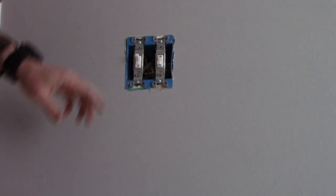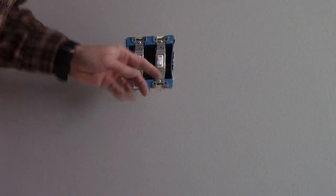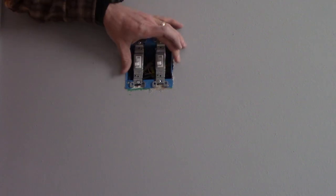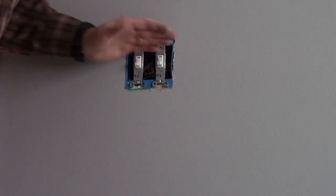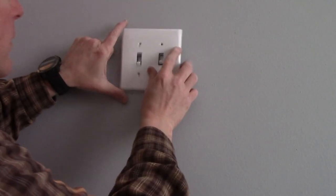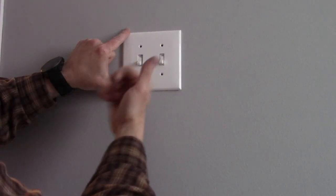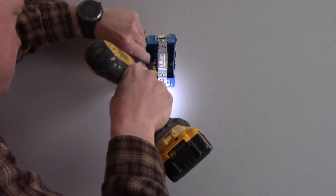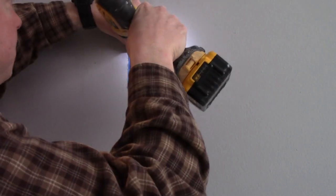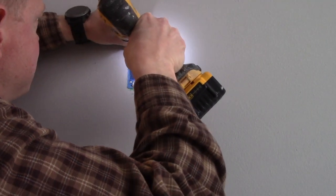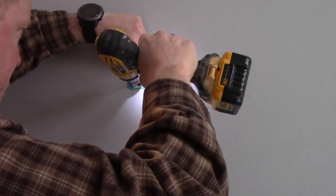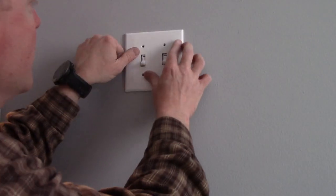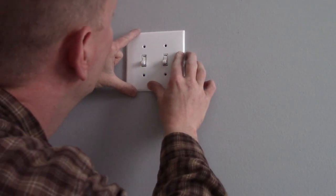Before you tighten these down you'll want to get the switch plate, the cover plate, and try it out because there is some adjustment between the switches. So you want these loose enough that you can get the cover plate where it needs to be. Once you're sure then you can finish tighten these down by hand. So we'll put our switch plate on here. See that this one needs to go that way just a little bit.